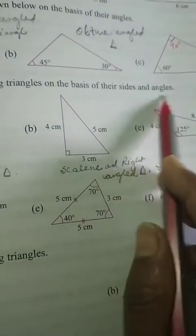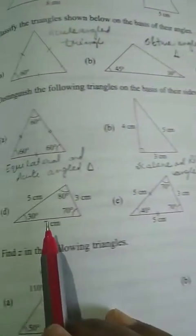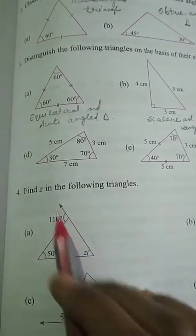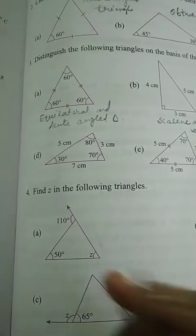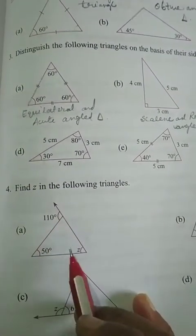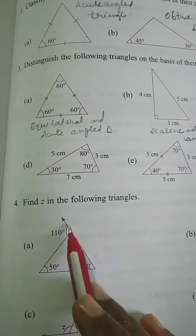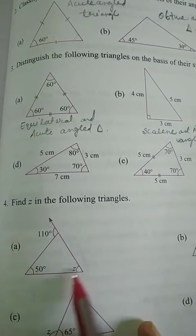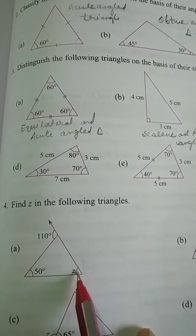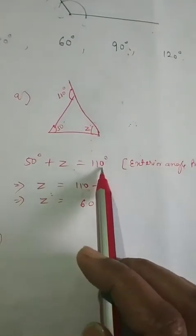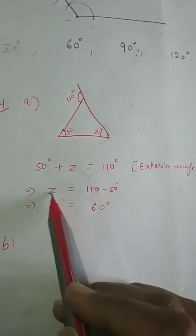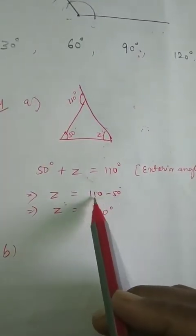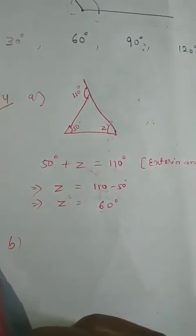The remaining similar questions I am leaving for you to do on your own. Now question number four: find z in the following triangles. You can see that this is an exterior angle, and as I have told you, the exterior angle is equal to the sum of the two opposite interior angles. So 110 degrees is equal to 50 degrees plus z. Solving: z equals 110 minus 50, which is 60 degrees.